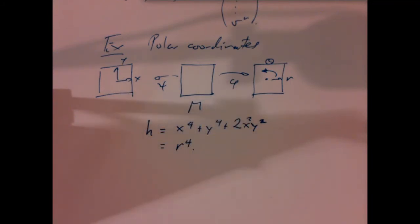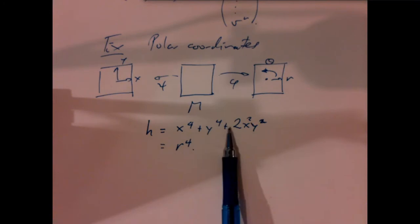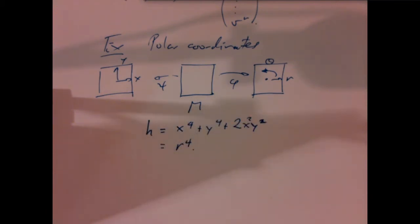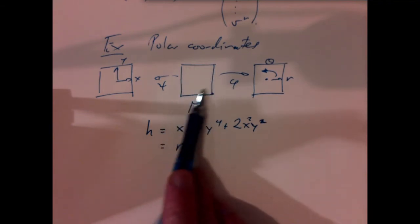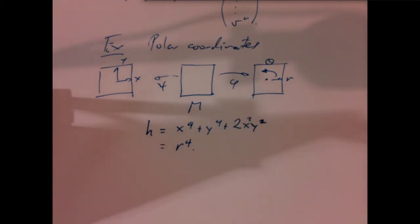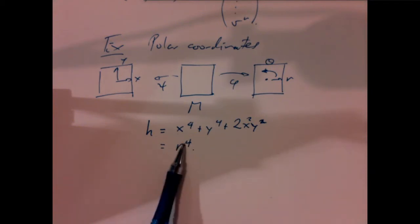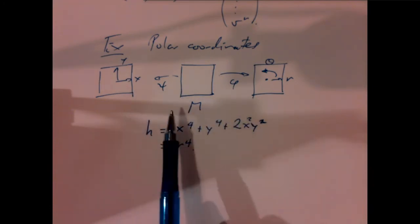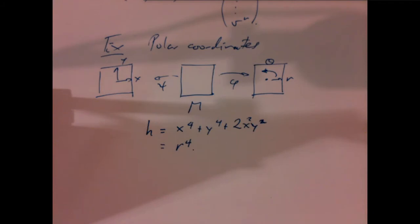We've always done this in polar coordinates without mentioning it: we always used the same letter h whether expressed in x's and y's or in r's and thetas, freely switching back and forth. We always identified these planes and switched between functions of different variables, calling them all by the same letter h.